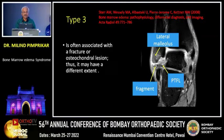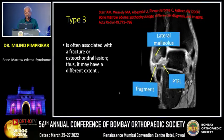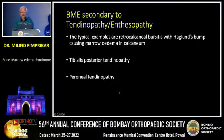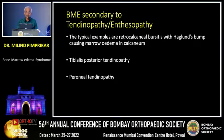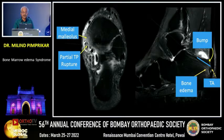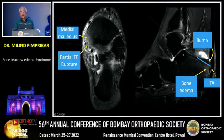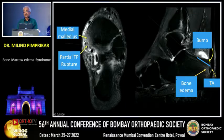Type 3 is often associated with fracture or osteochondral lesion. You can see an osteochondral fragment at the tip of the fibula with an ATFL injury. Regarding secondary tendinopathies, typical examples are retrocalcaneal bursitis or Haglund's bump causing marrow edema in the calcaneum, tibialis posterior tendinopathy, and peroneal tendinopathy. In a typical picture of tibialis posterior partial rupture, there is bone marrow edema at that point. In the posterior ankle, you can see Haglund's bump with calcaneal bone edema and fluid in the retrocalcaneal bursa.